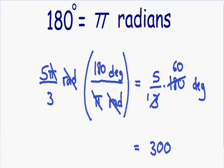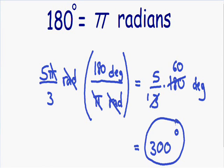Instead of writing degrees with the letters DEG, I'll just use the degree symbol. So we know that 5 pi over 3 radians is equal to 300 degrees. I hope this gave you a better idea of how to convert radians and degrees, and really how to convert any units in general. I hope you enjoyed this video, and I will see you in my next one.